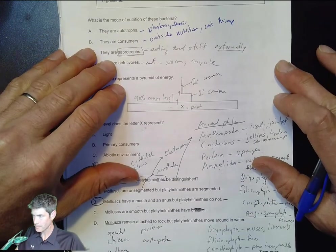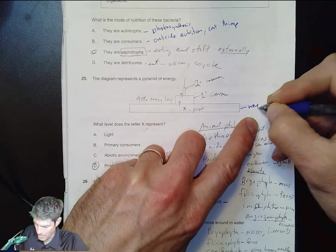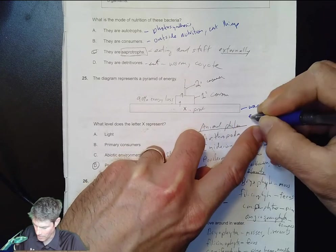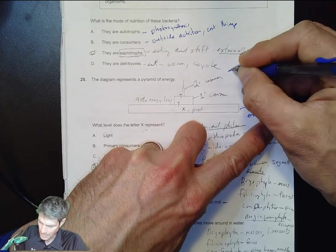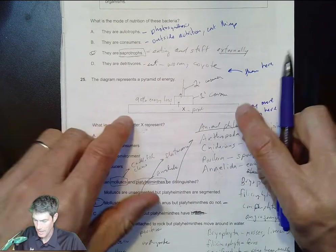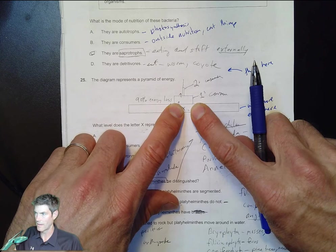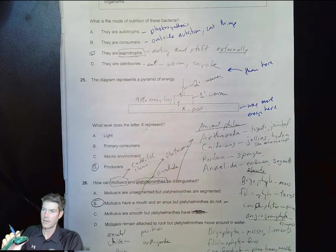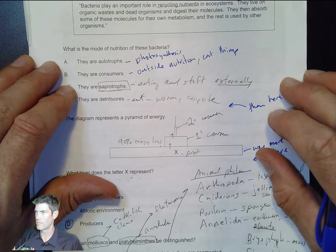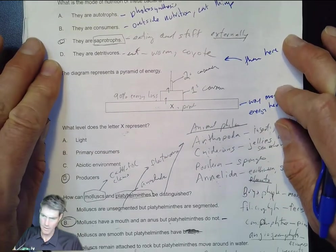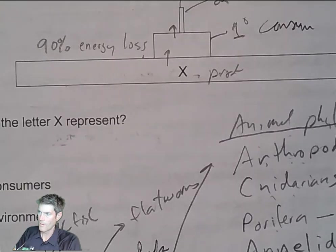Remember the pyramid of energy - there's always way more at the bottom, way more energy here than here. You'll see that huge step down. Remember only 10 percent of the energy is moving through to the next level, so you're always going to have the bottom being pretty big and the top being pretty small.